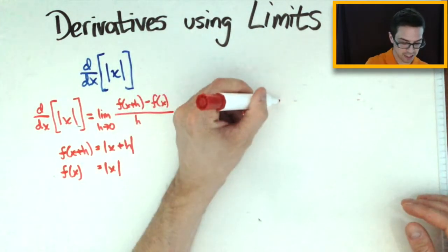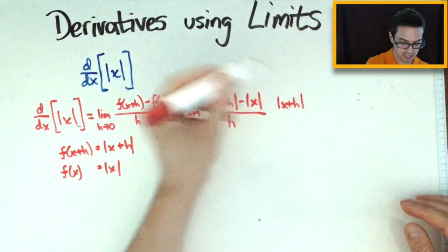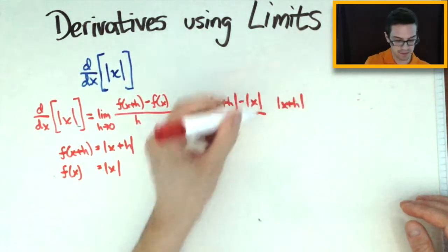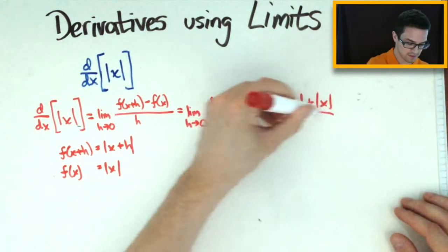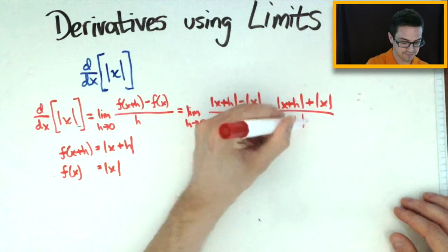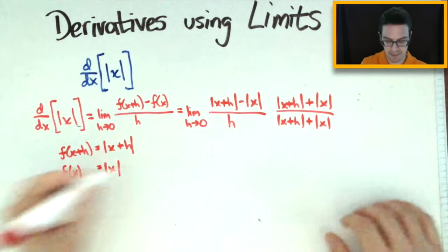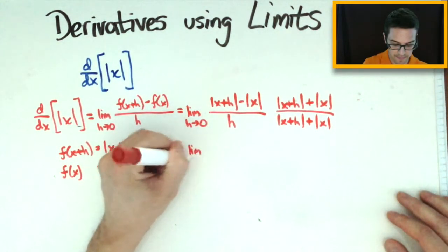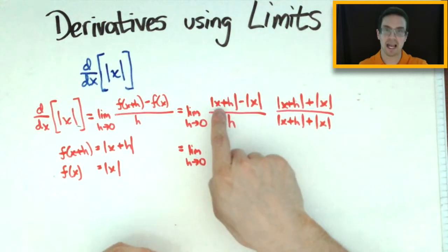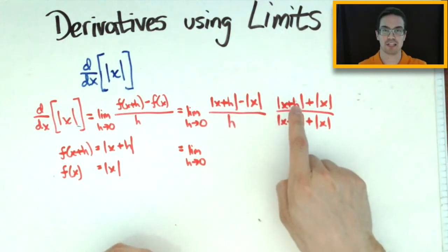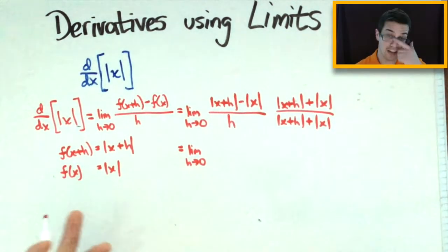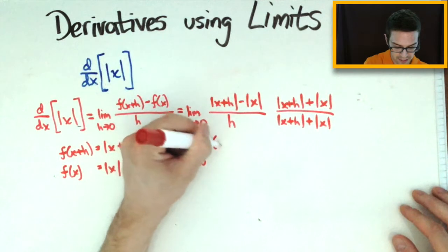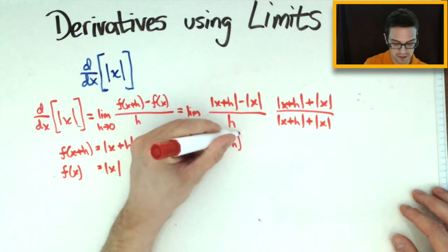I'm going to multiply by the conjugate, which is the absolute value of x plus h plus the absolute value of x — so instead of minus the absolute value of x, it's now plus the absolute value of x. Multiplying across the top, you get the absolute value of x plus h times itself, which is the absolute value of x plus h squared. Since it's squared it's already positive, so I can remove the absolute value bars and just write x plus h, quantity squared.